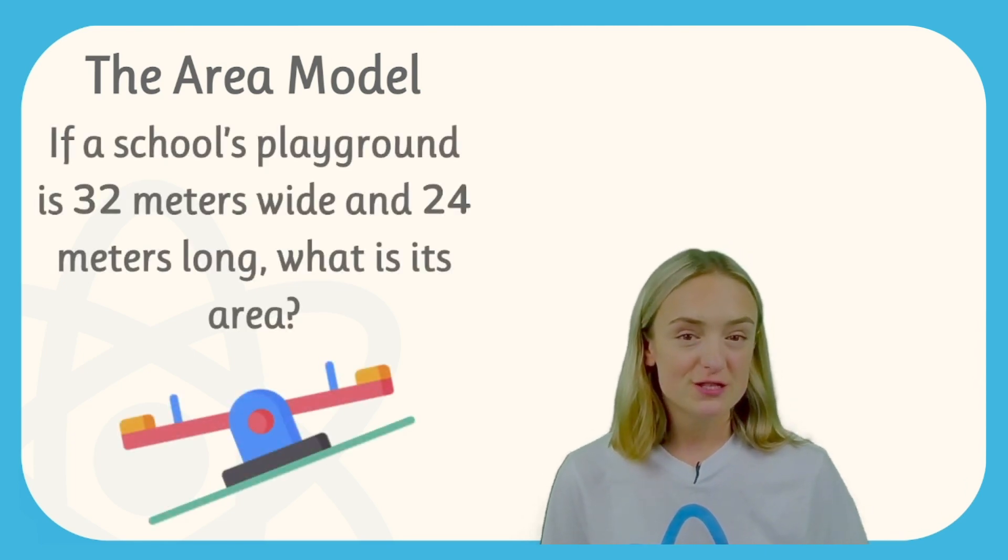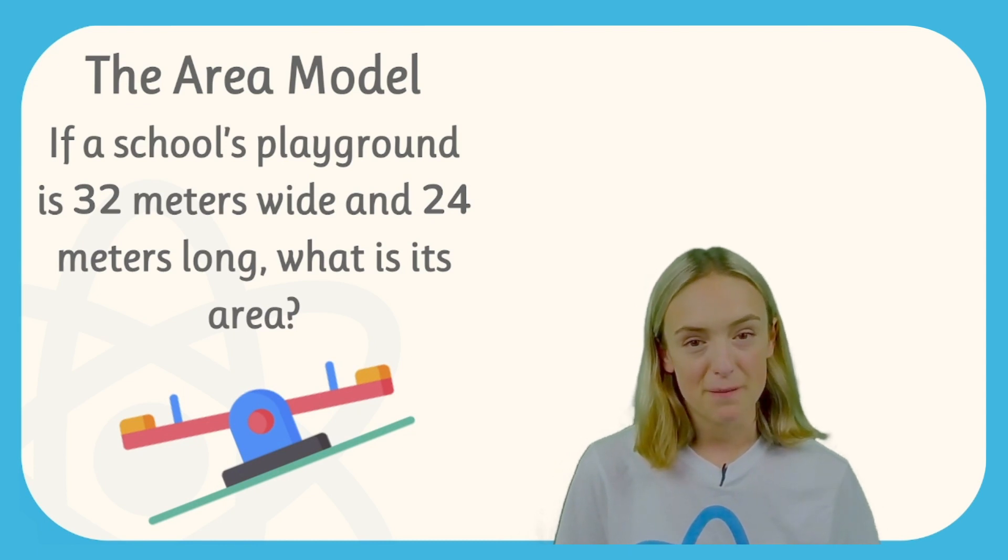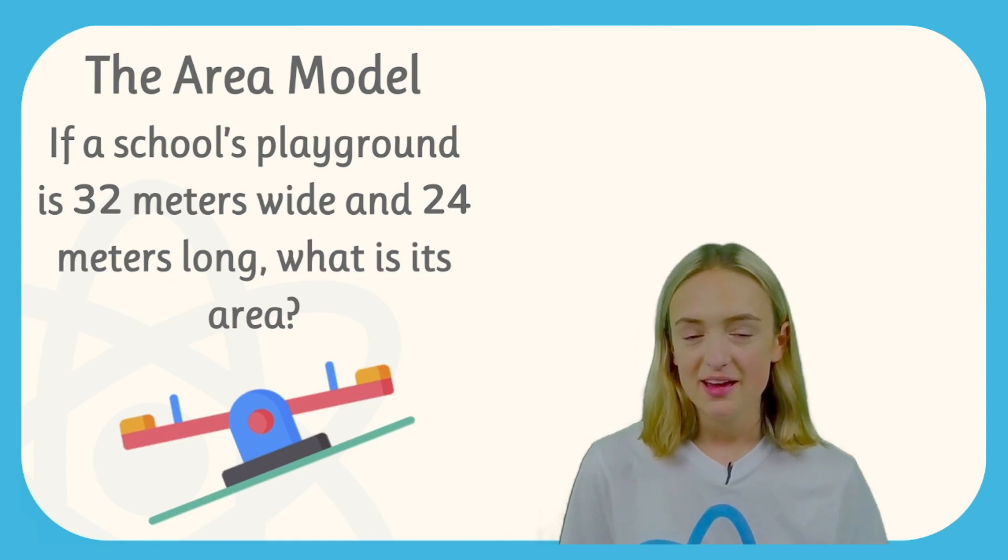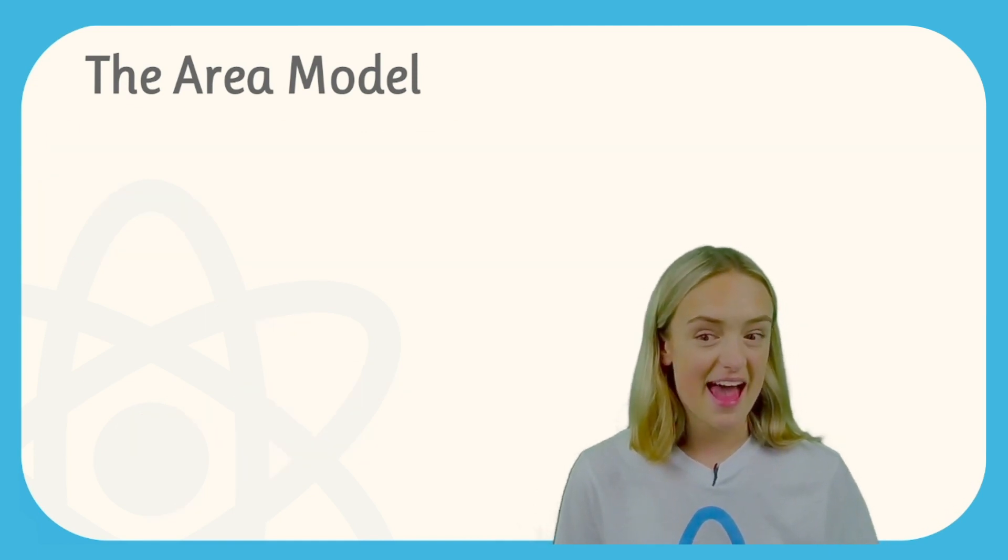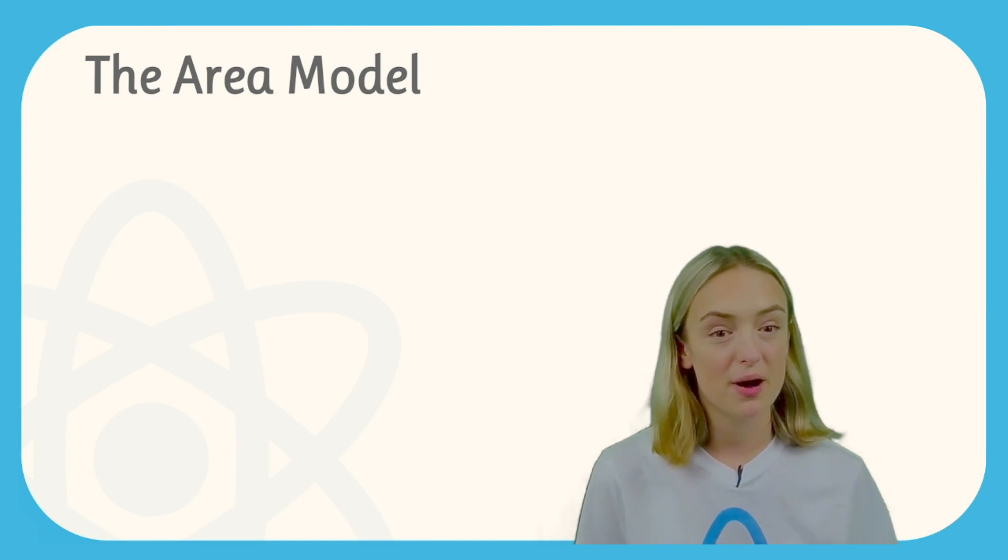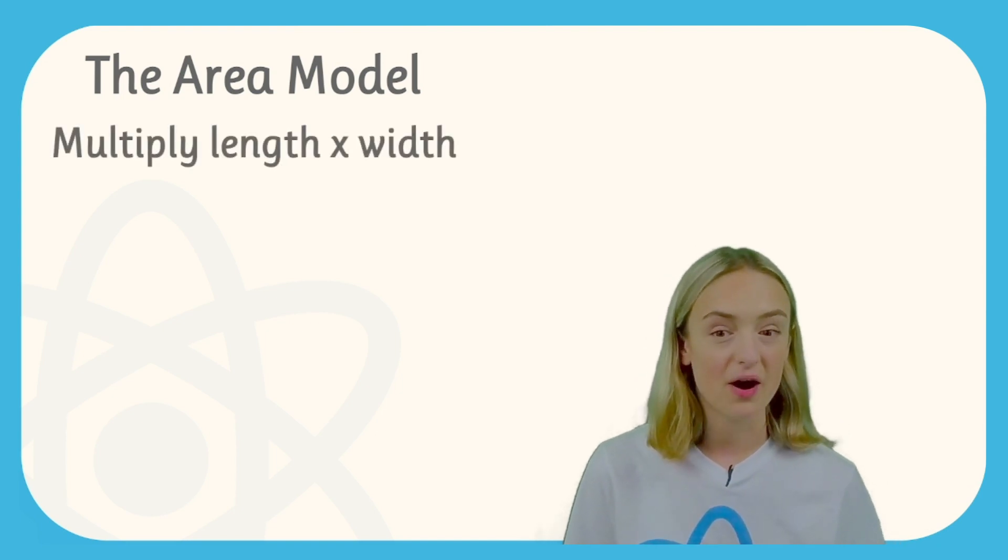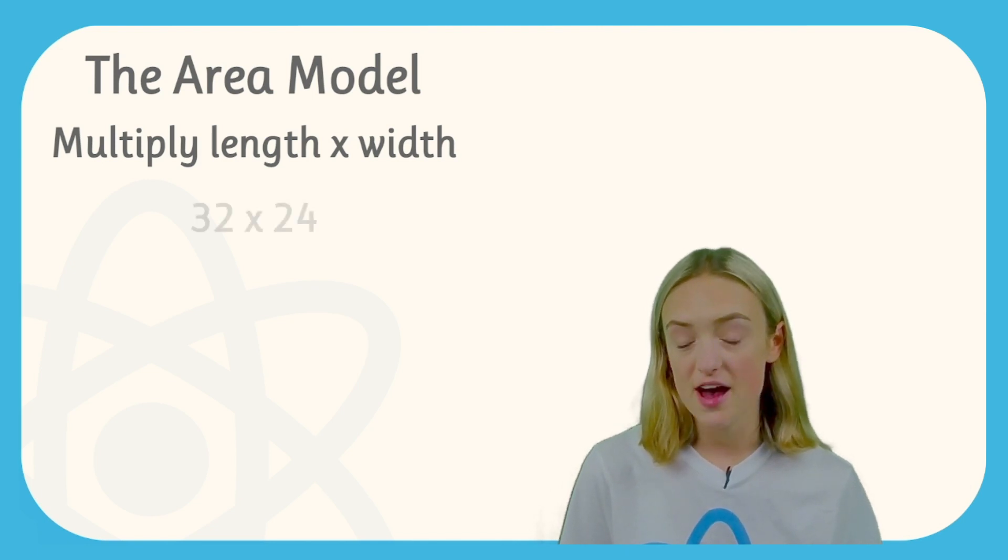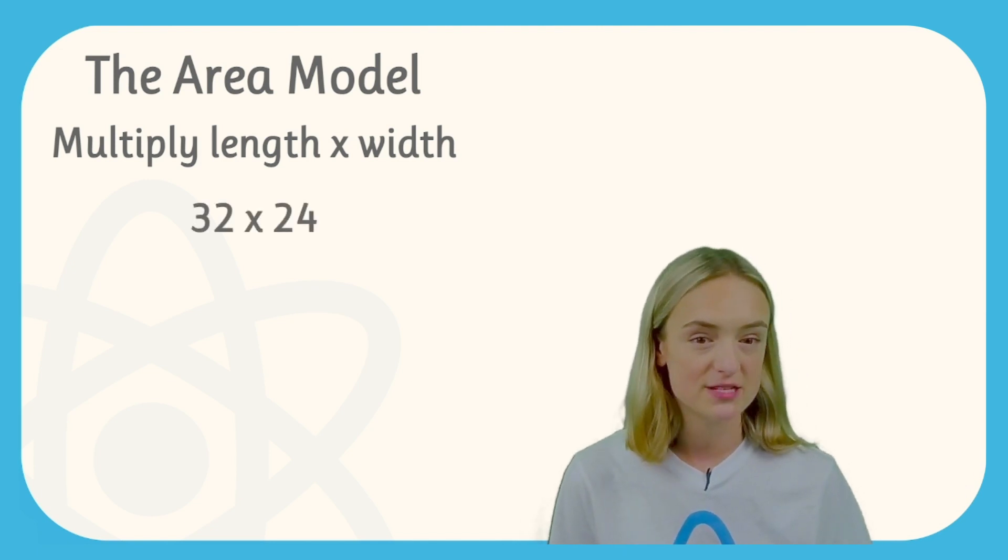If a school's playground is 32 metres wide and 24 metres long, what is its area? Now to calculate area we need to multiply the width by the length, and this gives us the calculation in this example of 32 times by 24.